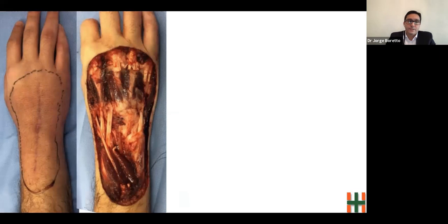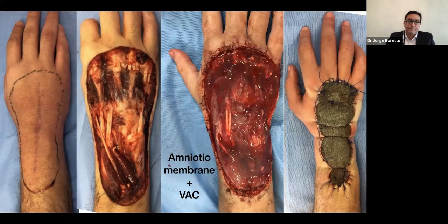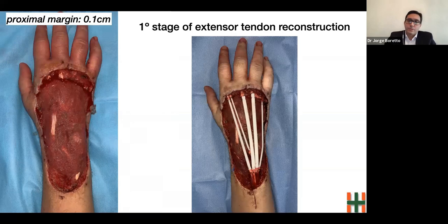As per protocol, the reconstruction was delayed. However, the extensor carpi radialis brevis and longus, extensor pollicis longus, and extensor pollicis brevis tendons were exposed. To avoid tendon necrosis, we used an amniotic membrane to cover them, and then VAC therapy was applied. After two weeks, pathology showed the proximal margin was not enough, so a wider resection was carried out, and we performed the first stage of extensor tendon reconstruction with silicone rods.